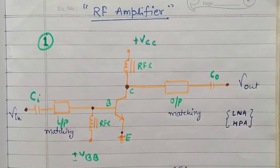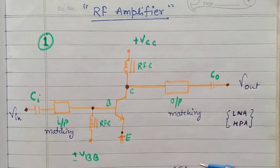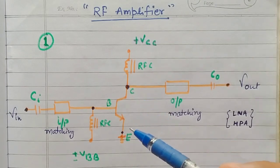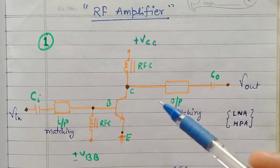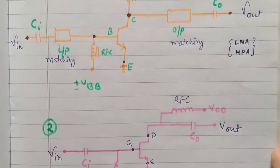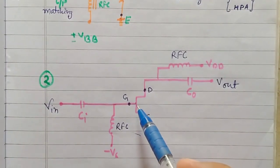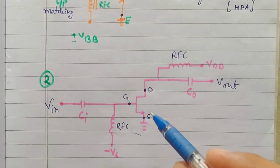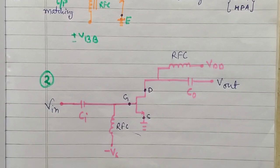Welcome to radio frequency classes. In today's lecture I will discuss the basics of RF amplifier design. There are two formats I will cover: first, a BJT denoted with terminals collector, base, and emitter — I will use an NPN transistor. Second, a MOSFET (metal-oxide-semiconductor field-effect transistor) with terminals drain, gate, and source. For both I will explain biasing, the decoupling circuit, and the complexity involved in designing an RF amplifier.